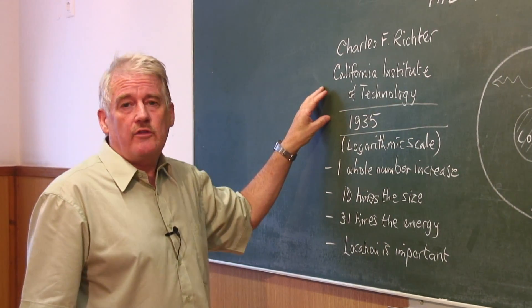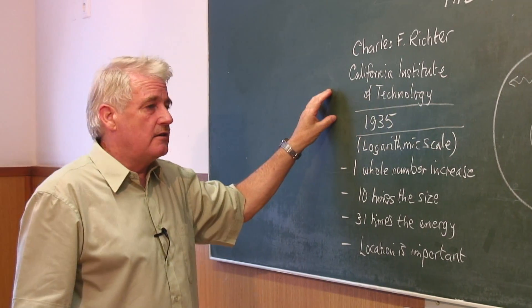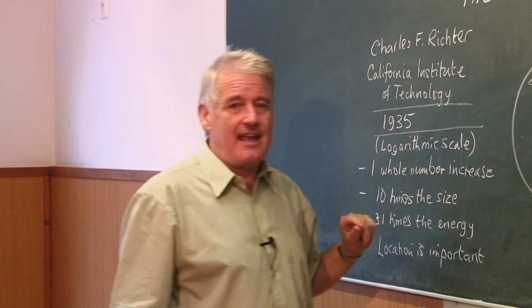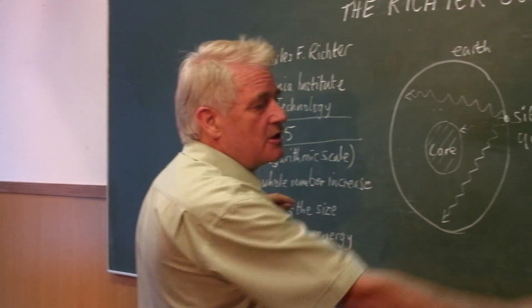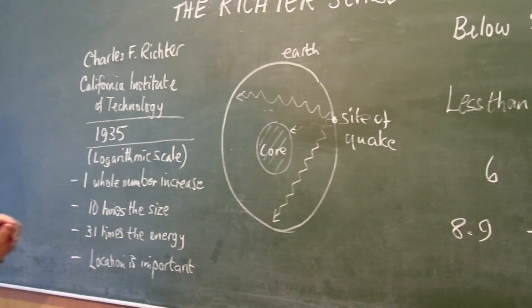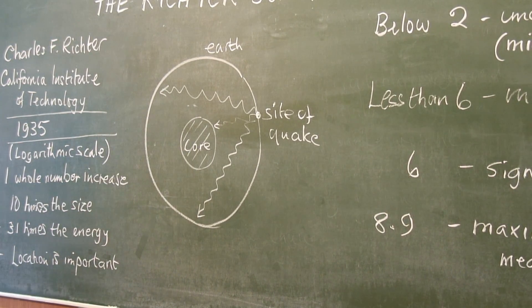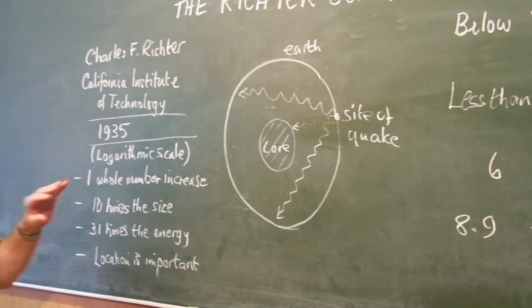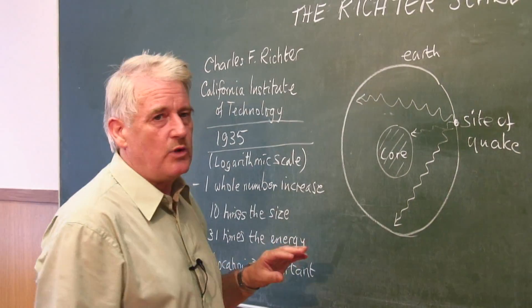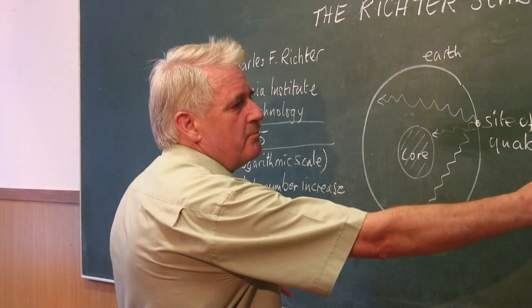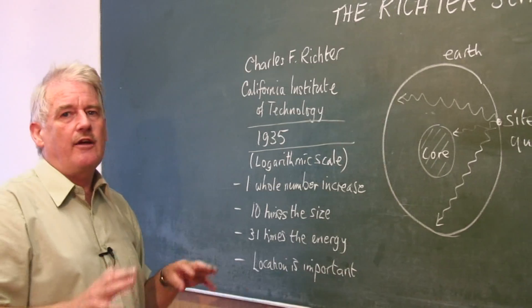The scale, although it goes up to 10, has never actually been measured at 10. The biggest reading has actually been a magnitude 8.9. This is a huge earthquake and obviously most earthquakes that we hear about tend to be above 6 and around 7.